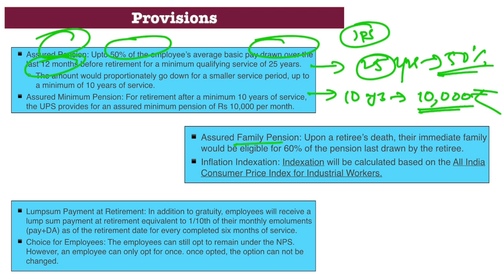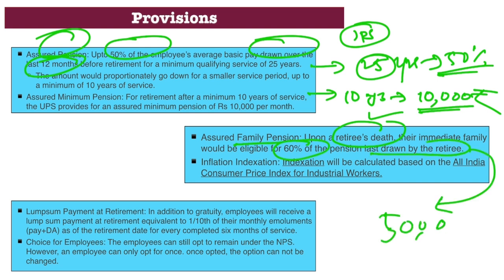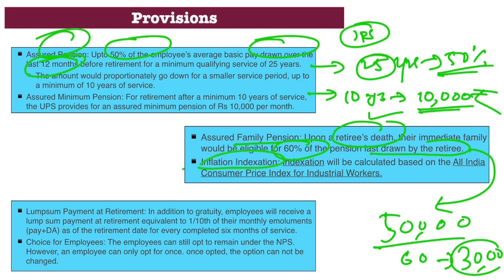There is also an assured family pension: on the death of the retiree, 60% of the pension drawn by the retiree is given to the family. For example, if the retiree's last drawn pension was Rs. 50,000, then 60% of that — Rs. 30,000 — would be given to the family as pension. Additionally, there is an inflation indexation provision.